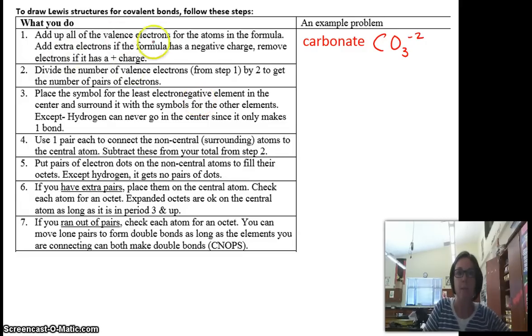The first thing we do is add up all of the valence electrons for the atoms in the formula. We're finally going to do something with the second sentence. Add extra electrons if the formula has a negative charge. We would remove electrons if it had a positive charge. So carbonate is carbon, which is 4 valence electrons. There are 3 oxygens, which are each going to have 6. And then it's got a negative 2 charge, so there are 2 extra electrons in our formula.